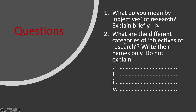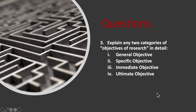Review questions: one — what do you mean by objectives of research? Explain briefly. Two — what are the different categories of objectives of research? Write the names only: general objectives, specific objectives, immediate objectives, and ultimate objectives. Three — explain any two categories of objectives of research in detail, choosing from general, specific, immediate, or ultimate objectives.